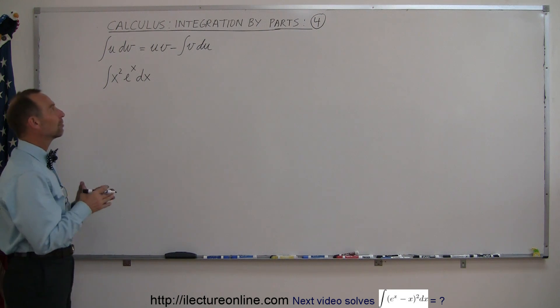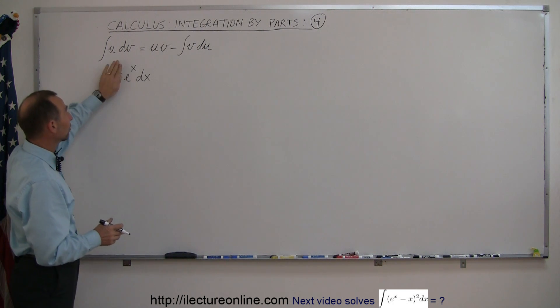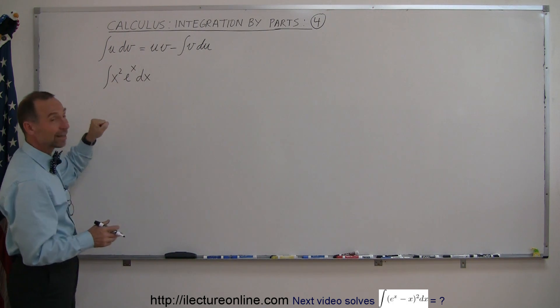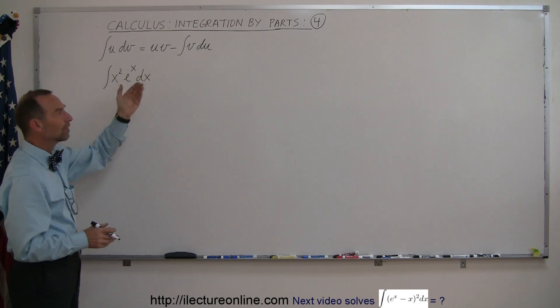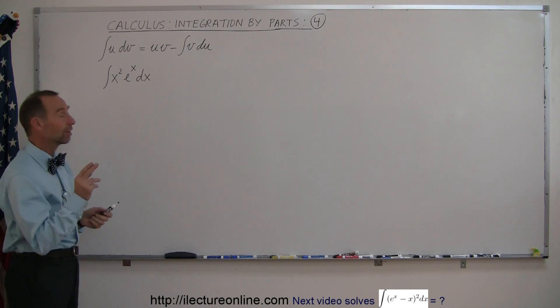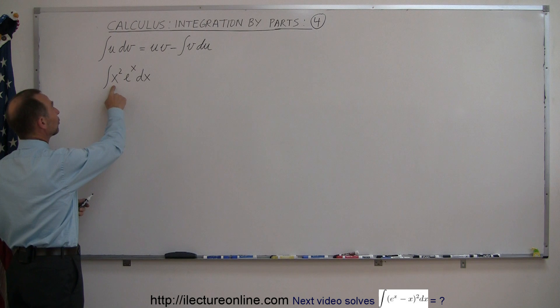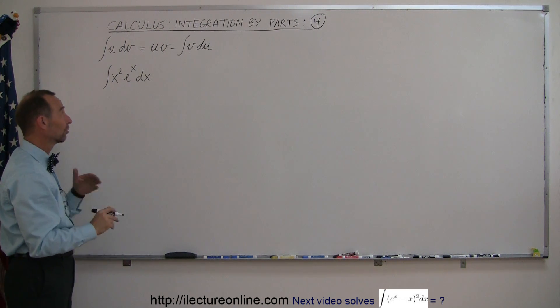Usually the methodology of integration by parts allows you to get rid of things that prevent you from integrating. For example, e to the x dx is easily integratable, but with the x squared there, you can't do it. So you can get rid of the x squared by using integration by parts, but it turns out here in this case we'll probably have to do it twice. The first time we could probably reduce this to a single x, and then the second time we can get rid of the x.